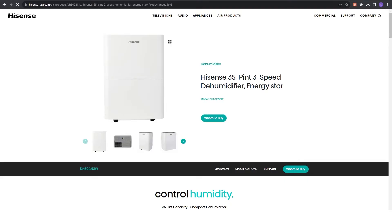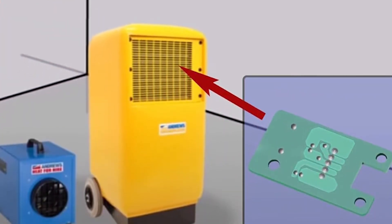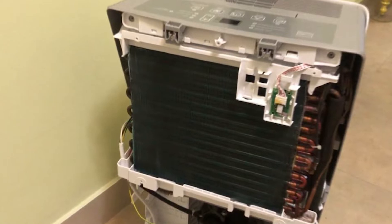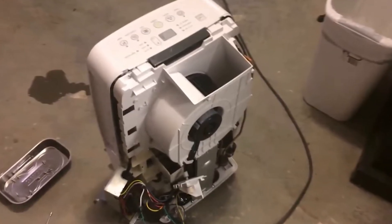The Hisense Dehumidifier contains a humidity sensor that maintains its relative humidity level. The Error Code E9 implies a problem with the sensor's circuits or the humidity sensor is open to the elements, causing a communication barrier between the dehumidifier and the sensor.